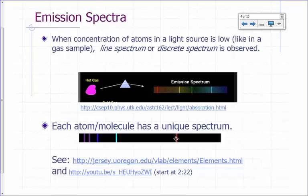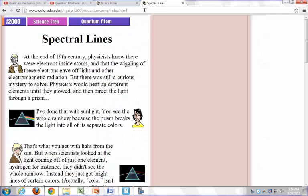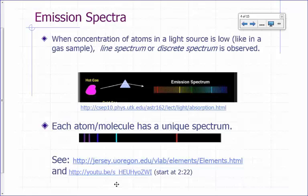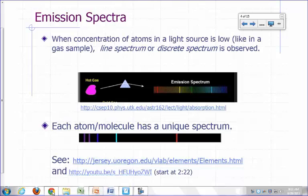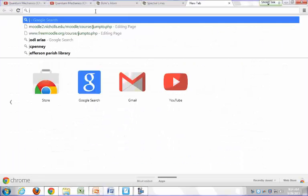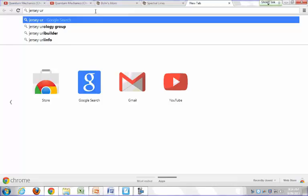You base it on the light that you see. So a very nice website that you can go to to see all these emission spectra from atoms would be this site right here. Jersey.Uoregon.edu. So just do a search for Jersey.Uoregon, University of Oregon.edu.